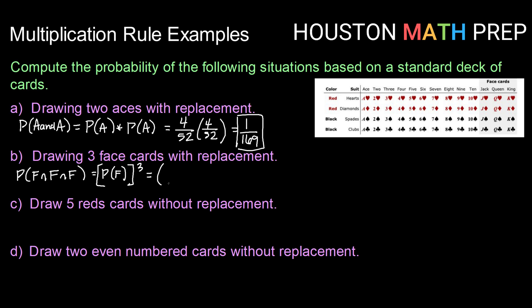So first of all, let's think about what's the probability of drawing a face card. There are 12 face cards out of 52 cards. Before I cube that, I'm going to reduce: 12 out of 52 is 3 out of 13. So when I cube that, 3 cubed is 27 and 13 cubed is 2,197. Our probability of drawing 3 face cards with replacement is 27 out of 2,197.